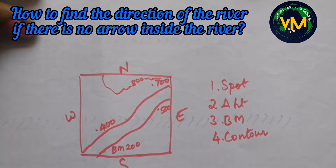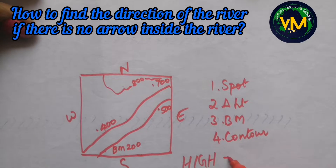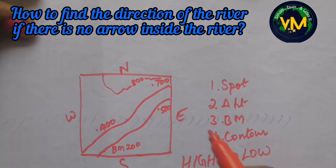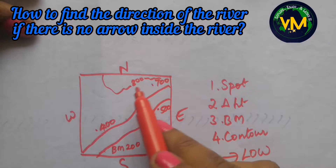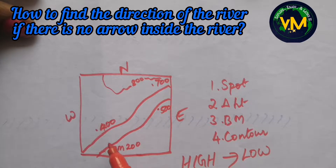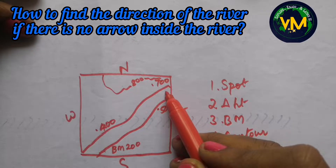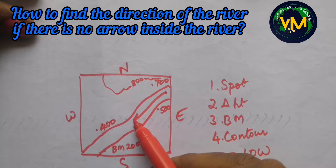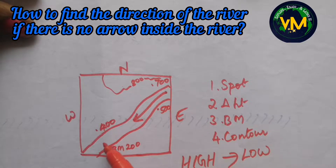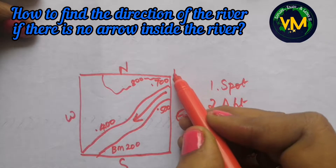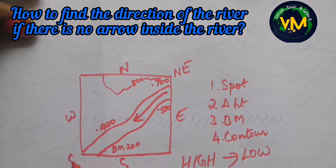We know that water always falls from high to low, from a high land to low land. Looking at these heights, we can conclude that the water is falling from the higher point to the lower point, and we draw the arrow accordingly. In this case the water is falling from northeast to southwest.